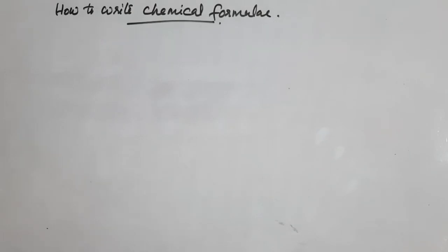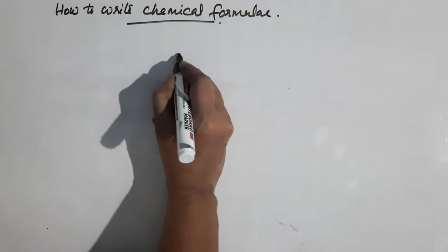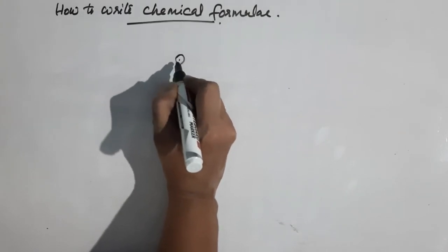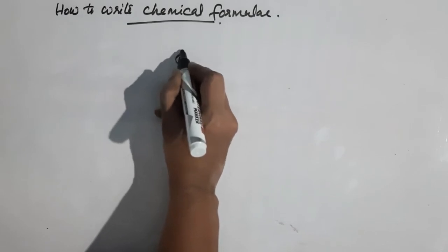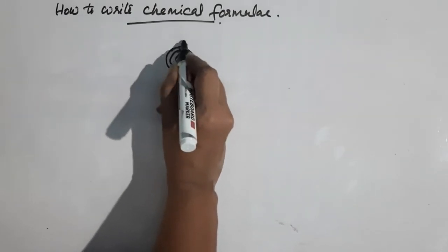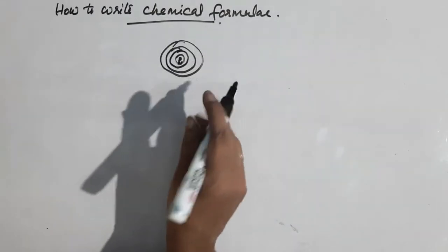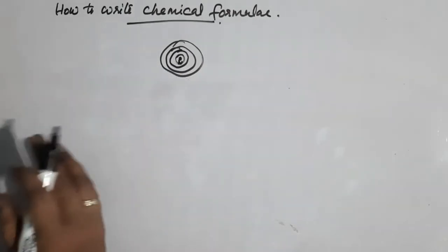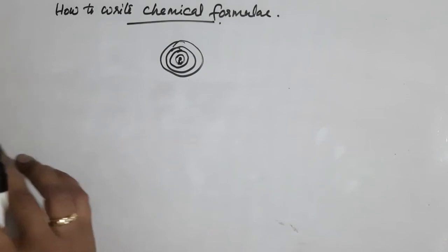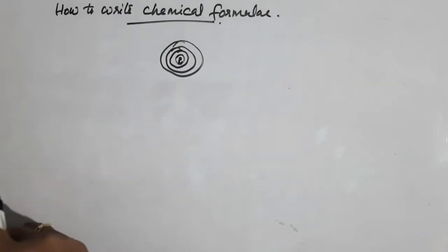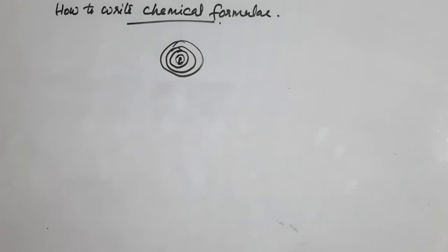So what is the atomic number? The atomic number is the number of protons — but there are also protons and neutrons. The atomic number is the number of protons, and the number of electrons is equal to the number of protons.